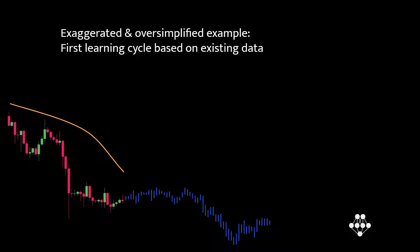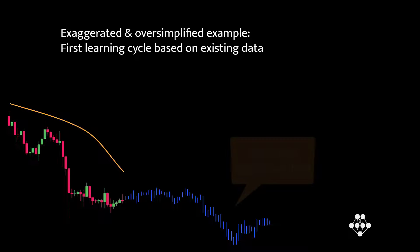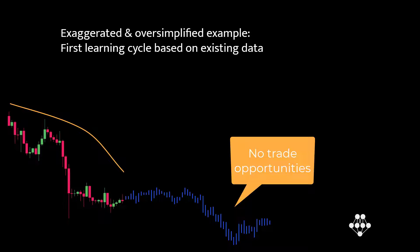As time progresses, new candlesticks appear. Our learning algorithm is constantly analyzing this data. And based on recent candlesticks, the model predicts that prices will go lower. Therefore, it suggests that it is not a suitable time for a long trade.